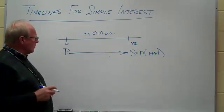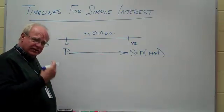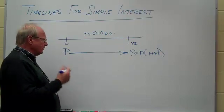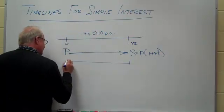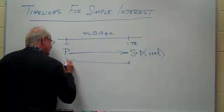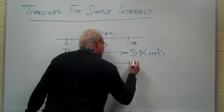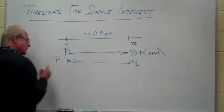I wonder what would happen if we went, knew the subsequent amount of money, and wanted to go backwards and find out the original principle. So we would take this money and we would take it back to here, and we would say well if we know the subsequent amount of money, then what does the principle equal?